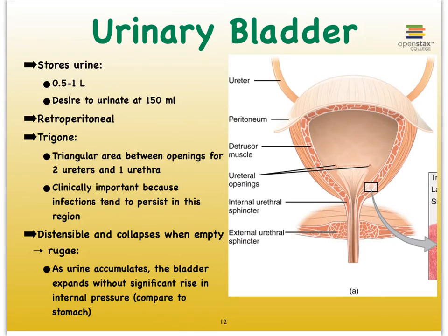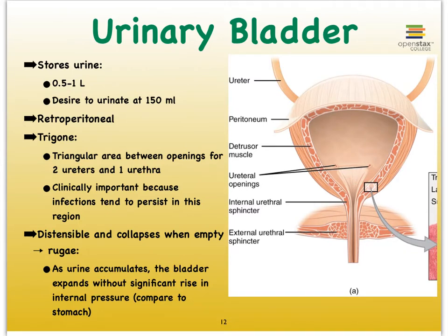The ureters enter the bladder from the back at a low level, and where they enter we see two openings that form a triangular region — together with the opening of the urethra — called the trigone. The trigone is clinically important because this is where pathogens like to hang out and create infections, so during urinary tract infections, this is often where they reside.